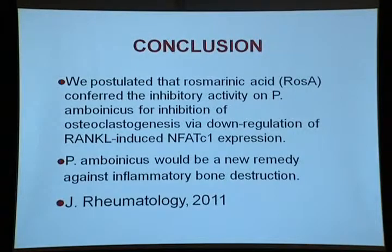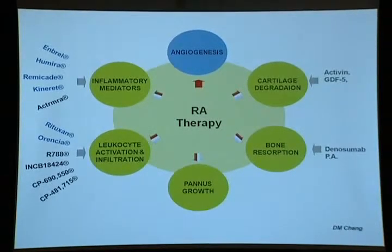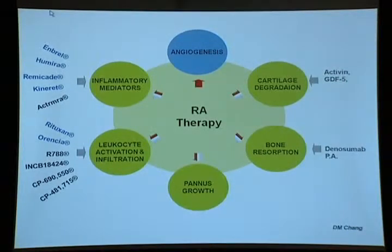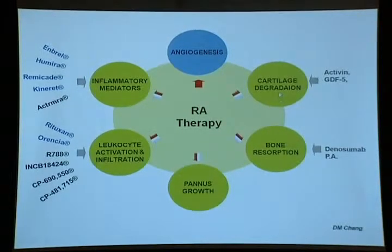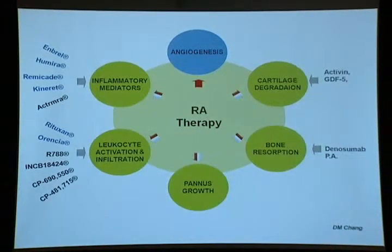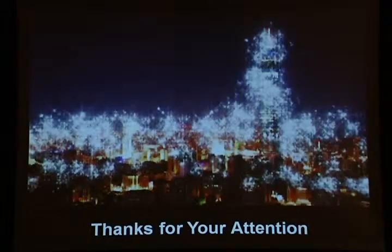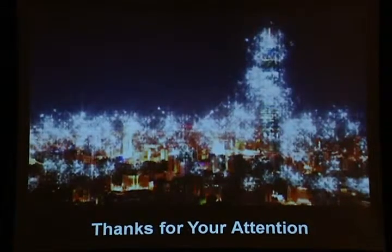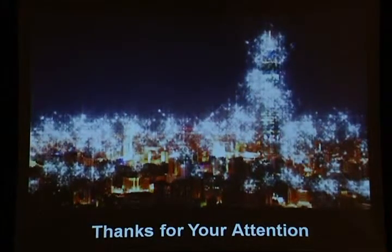This is the last slide: targeting rheumatoid arthritis by molecular and cellular strategies. One approach is how to stop synovial inflammation — by mediator inhibition, anti-cytokine inhibition, pannus growth inhibition, or leukocyte inhibition. The second is how to inhibit cartilage degradation, perhaps by anti-MMP proteins. The third is how to stop bone resorption using new molecules. Recent papers in international journals show that some molecules can inhibit bone resorption. Thank you very much for your attention.